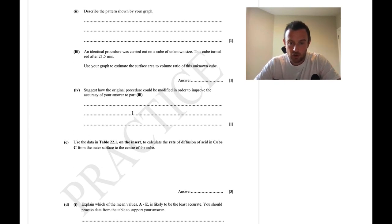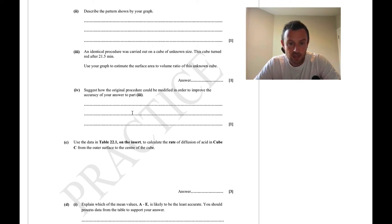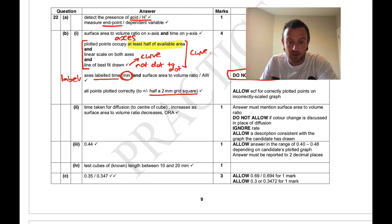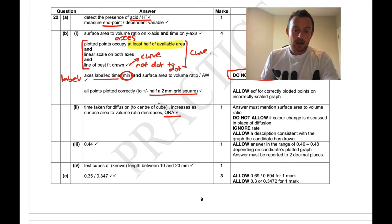To describe the pattern shown by the graph: as the surface area to volume ratio increases, the time taken for diffusion decreases. You could also say it the other way — time taken for diffusion increases as the surface area to volume ratio decreases.